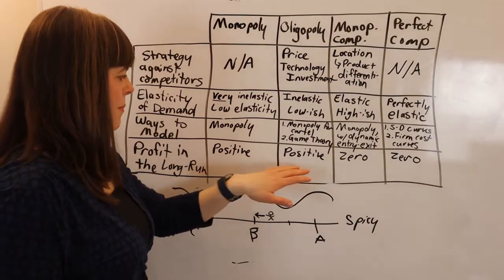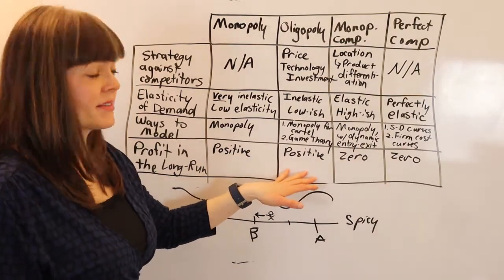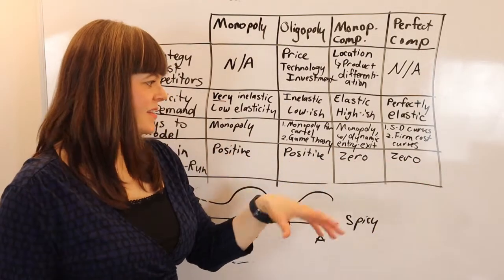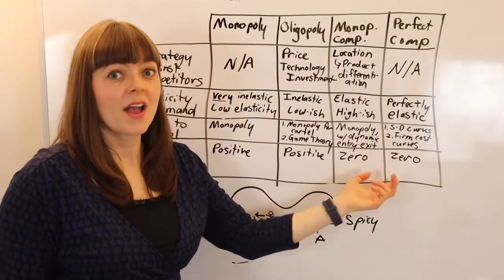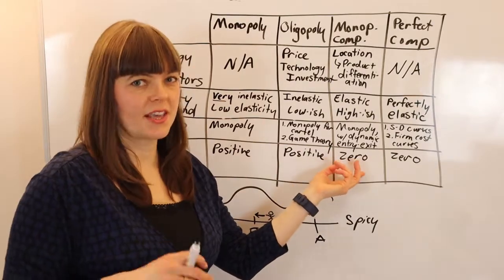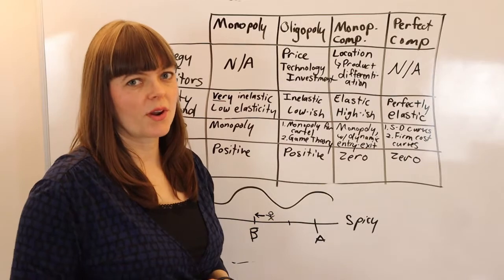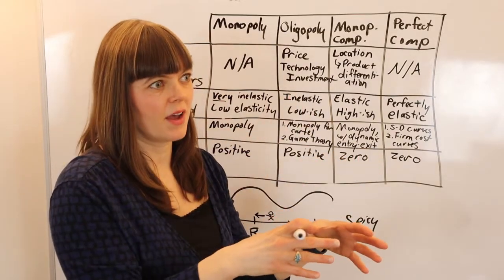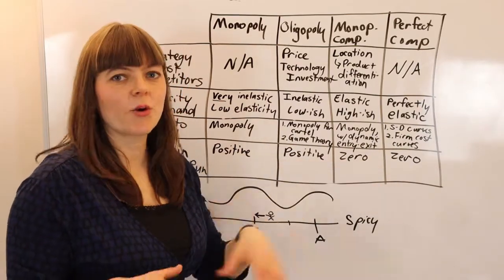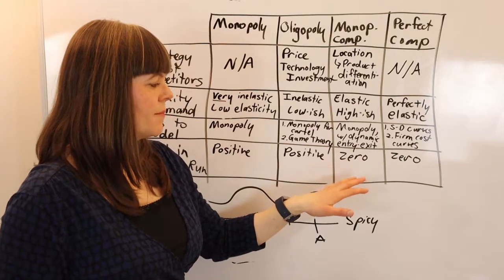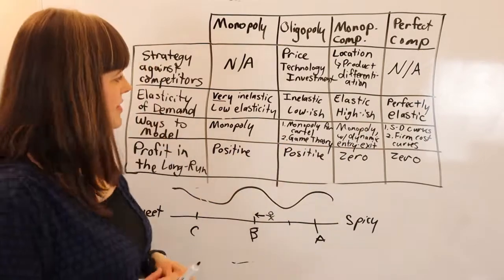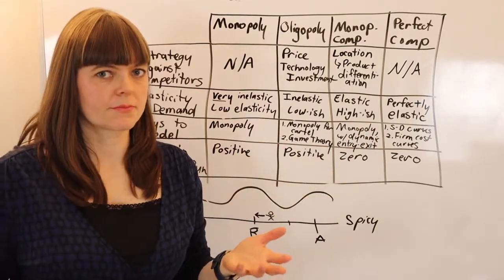In the long run, monopolies and oligopolies have positive economic profits. With monopolistic competition and perfect competition, firms enter and exit until profits equal zero. That doesn't mean investors earn nothing — they earn exactly their opportunity cost, the amount they could get elsewhere. If you don't pay them at least that, the firm goes out of business. So profits go to zero in the long run for those two types.